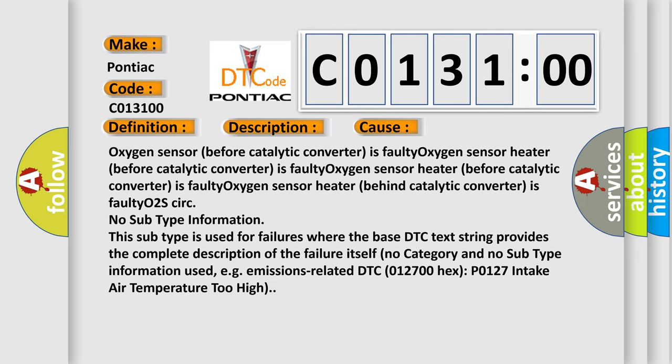No subtype information. This subtype is used for failures where the base DTC text string provides the complete description of the failure itself. No category and no subtype information used, e.g.